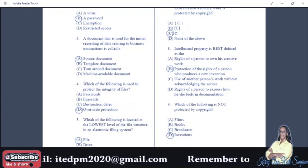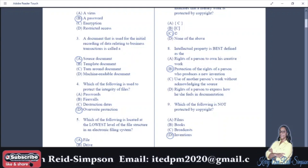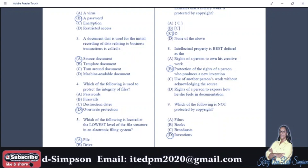Number four: which of the following is used to protect the integrity of files? A: passwords, B: firewalls, C: destruction dates, D: override protection. And your answer is D, override protection. Override protection has to do with protection of the integrity of files, which is not to be confused with the security of files.